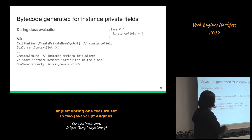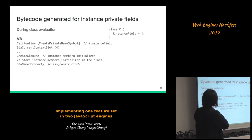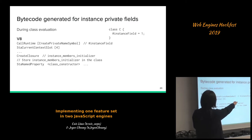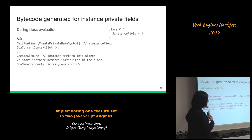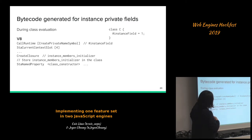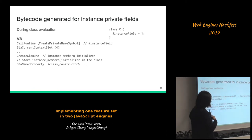Let's take private instance fields as an example and talk about the bytecode generated for them. During class evaluation, for a class that contains a private field, we emit bytecode to call into a runtime function which creates a private symbol. In V8, when implementing language features, we usually implement things in runtime functions first before migrating to new bytecodes. These private fields are implemented with private symbols which V8 already has.